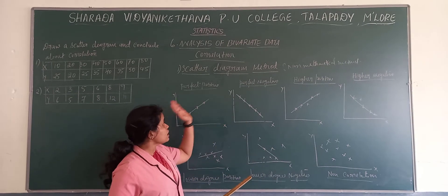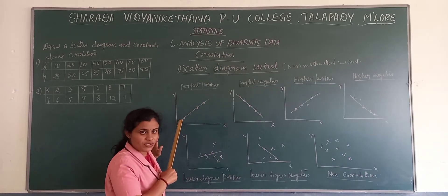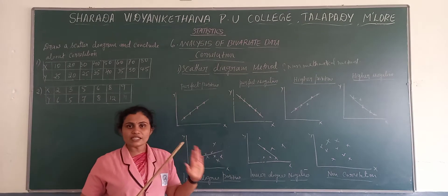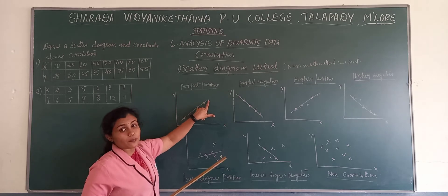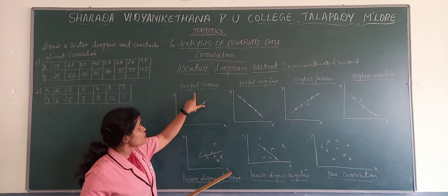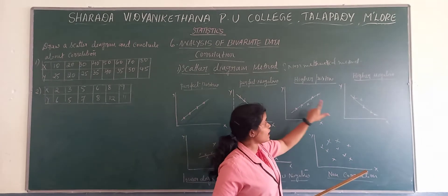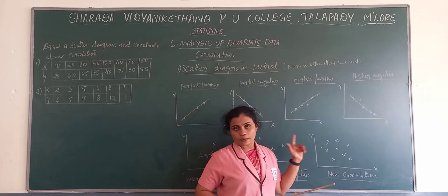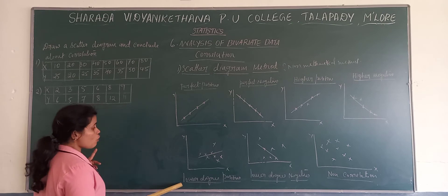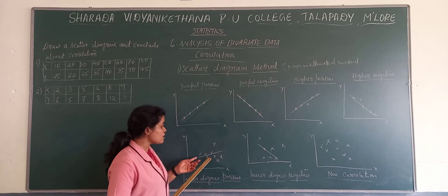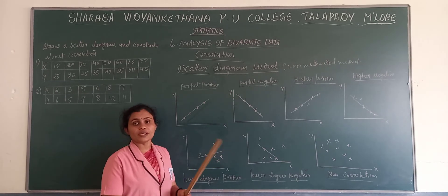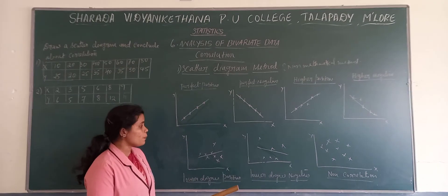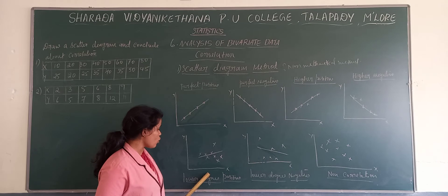In perfect correlation, you will get the path exactly on the plotted points. But in case of higher positive and higher negative, you will not get the path exactly on the plotted points — just here and there, but it will be close. For lower degree positive and lower degree negative, the path formed by the dots is wide — the dots are spread around the path.